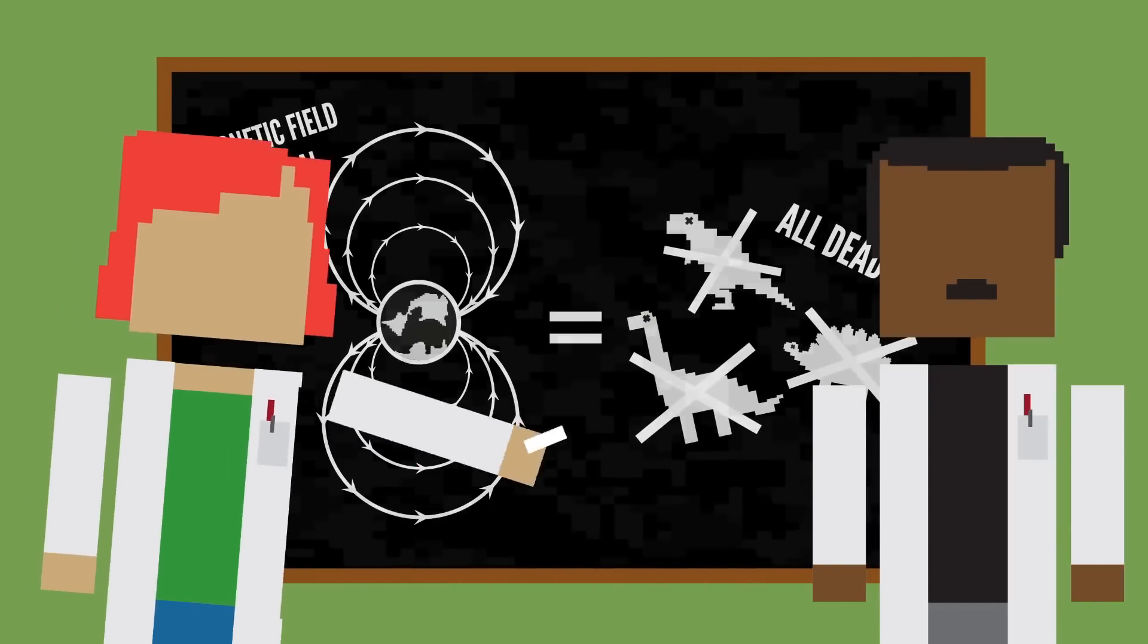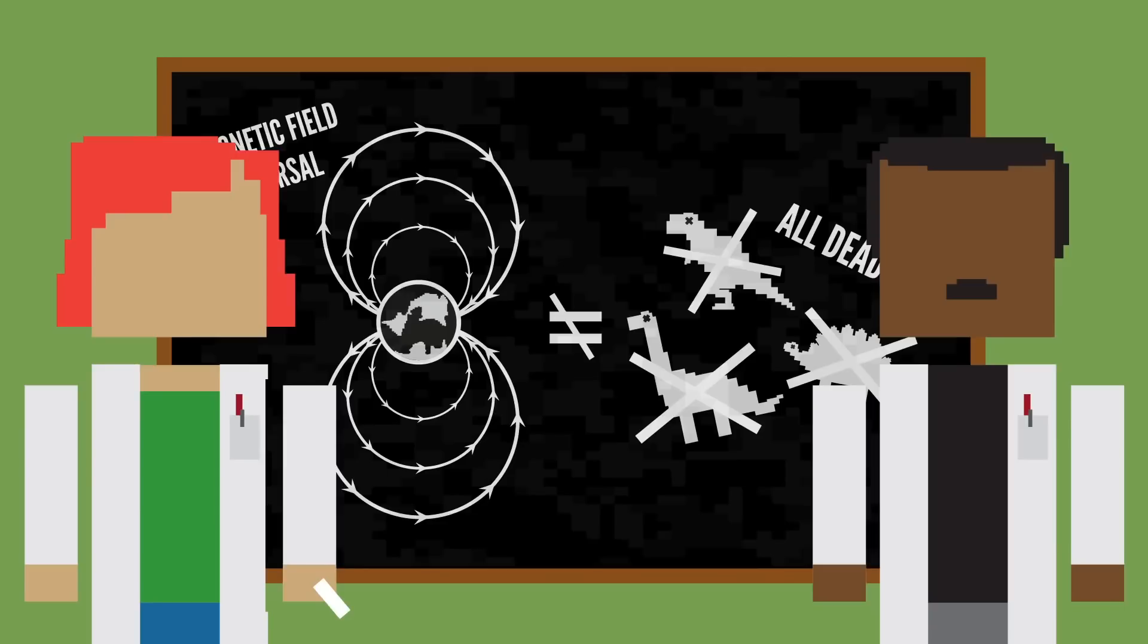But before you panic, don't worry. We're not all going to die because of this. There isn't any evidence to suggest that magnetic field reversals in the past have led to any mass extinctions. And even if the magnetic field does continue to weaken, we still have the atmosphere to protect us from harmful radiation.